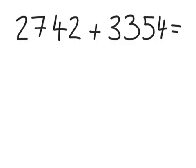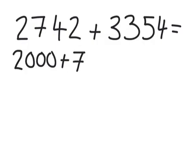So first of all, we partition out the numbers. The first number: 2,000, 700, 40, and 2.